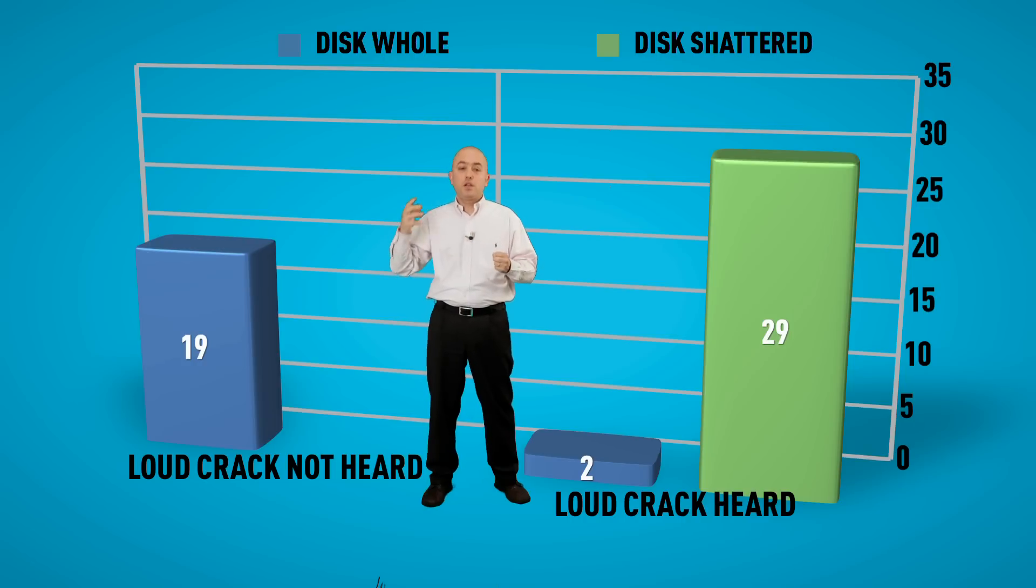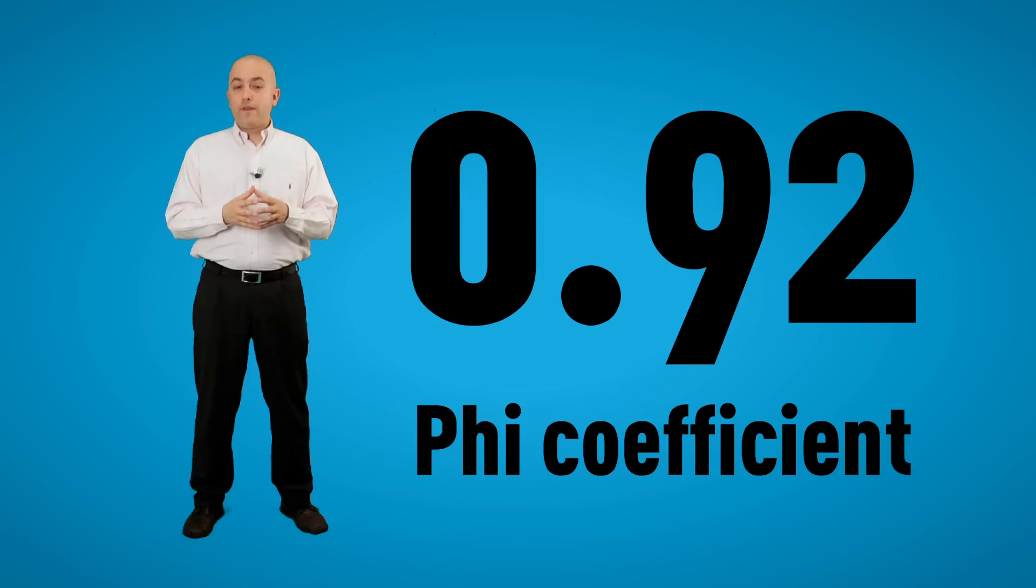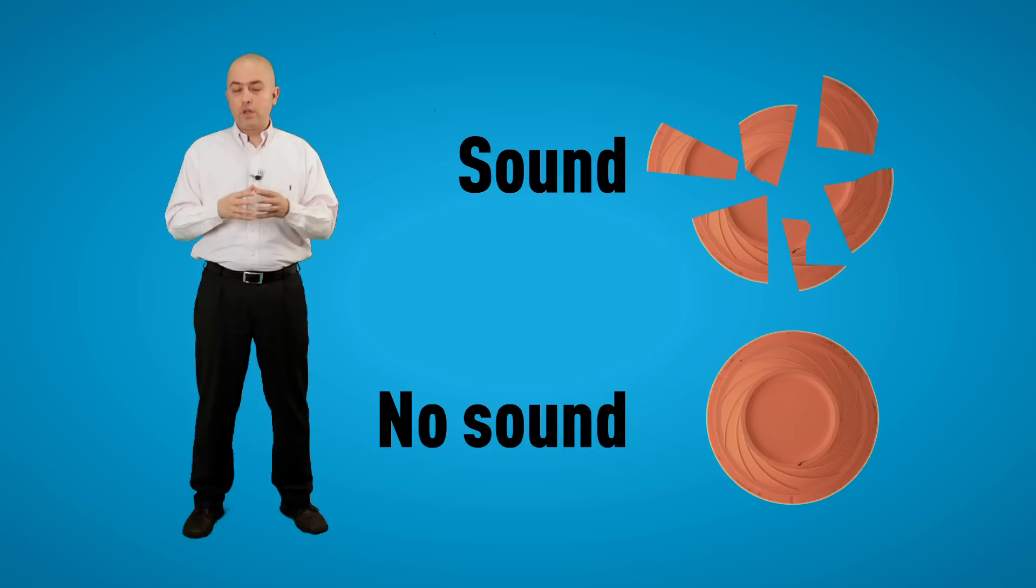When the sound is present, the disc usually shatters. In fact, the probability is extremely high. And when the sound is not there, it is almost with 100% certainty that the disc does not shatter. We can actually estimate the relationship between these two variables. This is actually called a phi coefficient and it is 0.92. It is almost perfect. Therefore, what can we conclude? When the sound is present, it is highly likely that the disc shatters. When the sound is not present, it is highly likely that it does not.